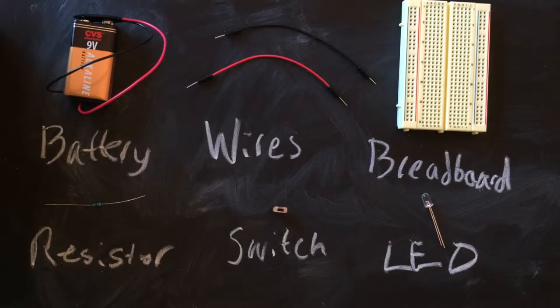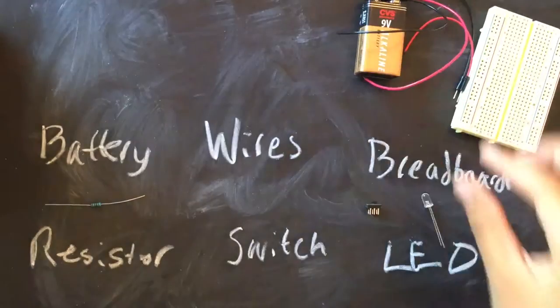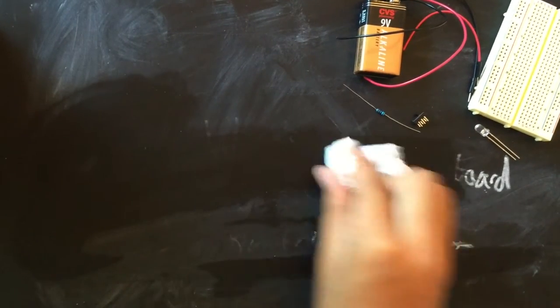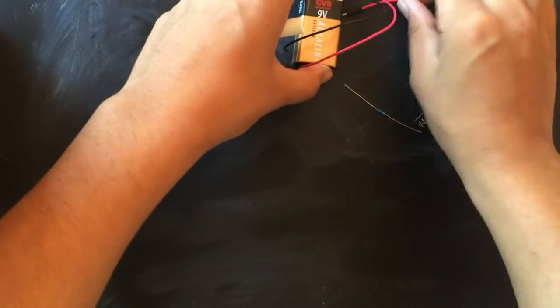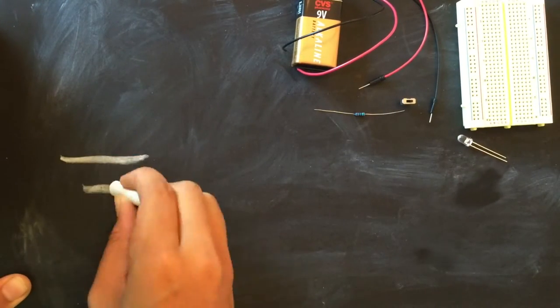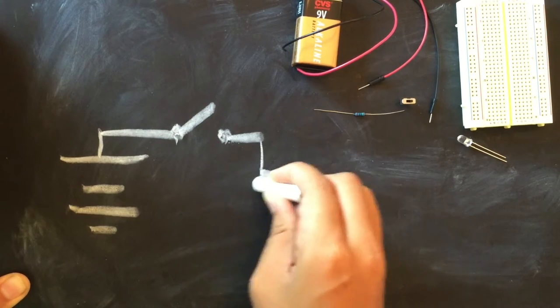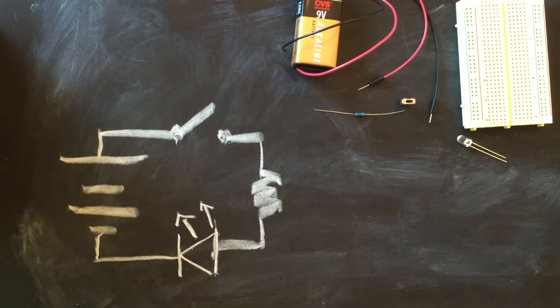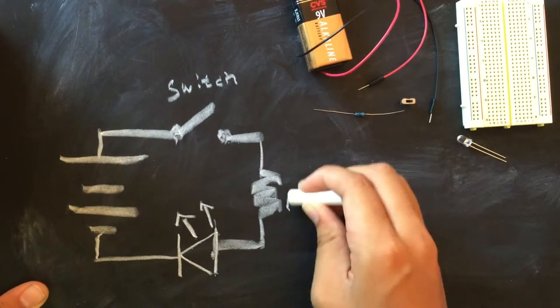Now this circuit we're about to build is just one part of an integrated electronic system. Keep in mind that an integrated electronic system combines many circuits. Now I'm going to draw the circuit diagram, which is like the blueprints for building our circuit.